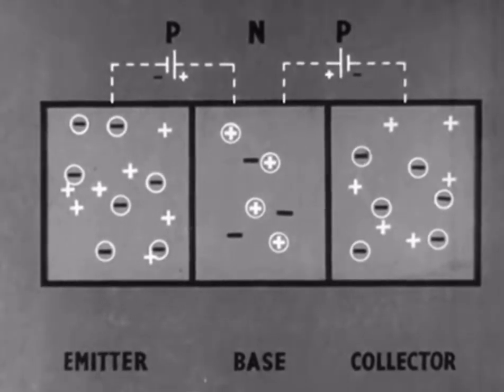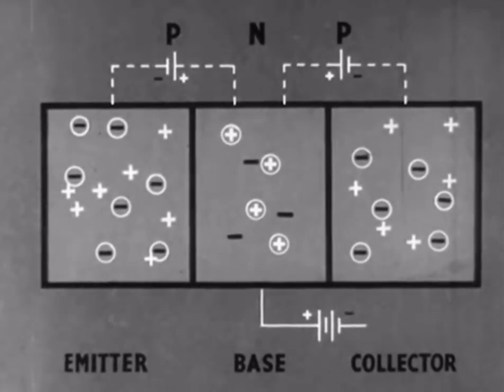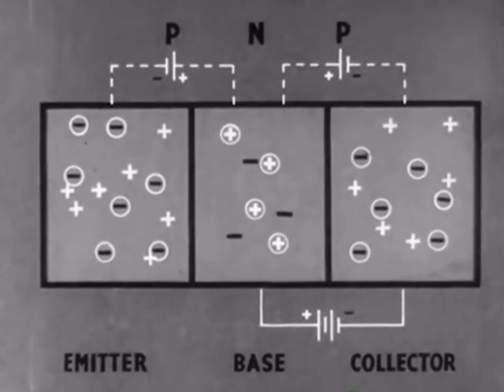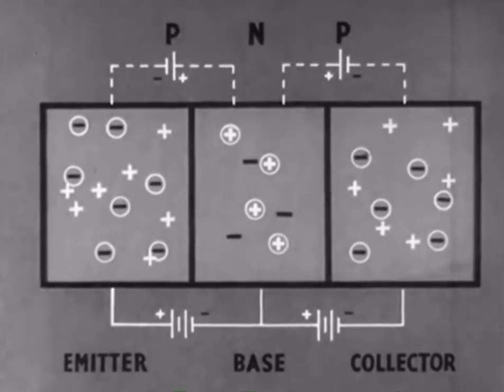Now a real battery is connected between the base and collector, with the negative pole to the collector terminal, the condition for no current flow. A second battery is connected between the base and emitter, with the positive pole to the emitter, so that current will flow.